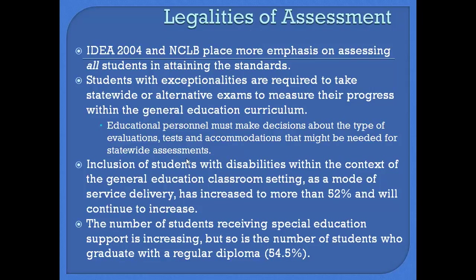Students with exceptionalities are now required to take statewide tests, or if they are unable to take the statewide test, they have to take an alternative exam. This is how we're measuring progress within the general education curriculum. We have to make decisions about the type of evaluations, the tests, and accommodations that might be needed in order for those students to take the statewide test.